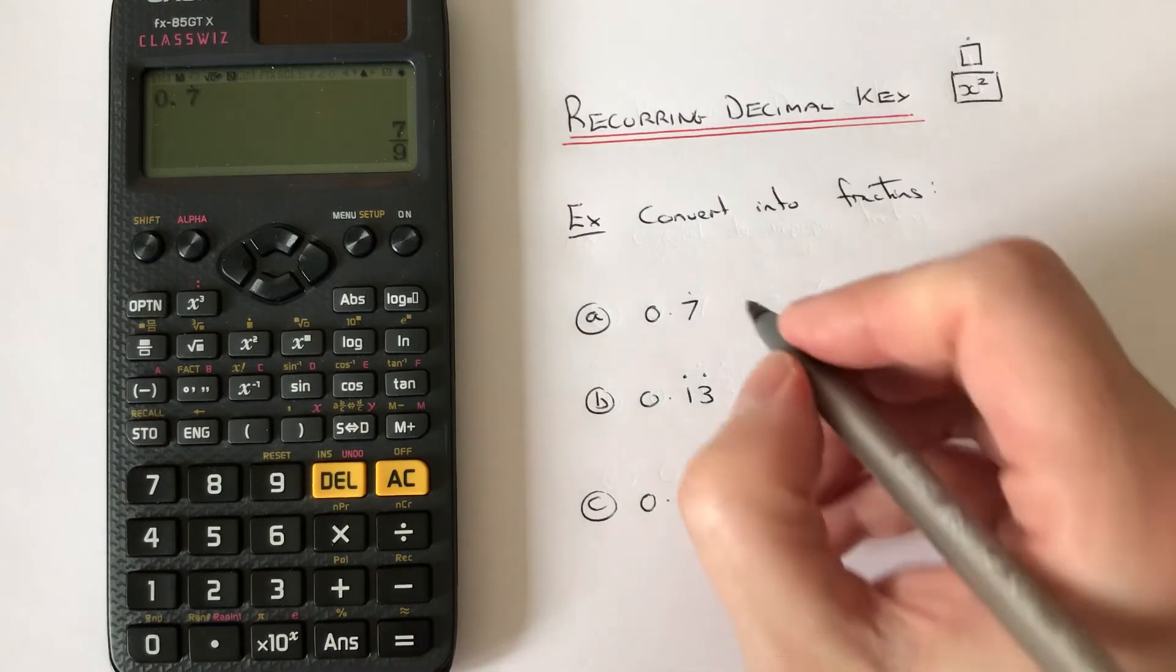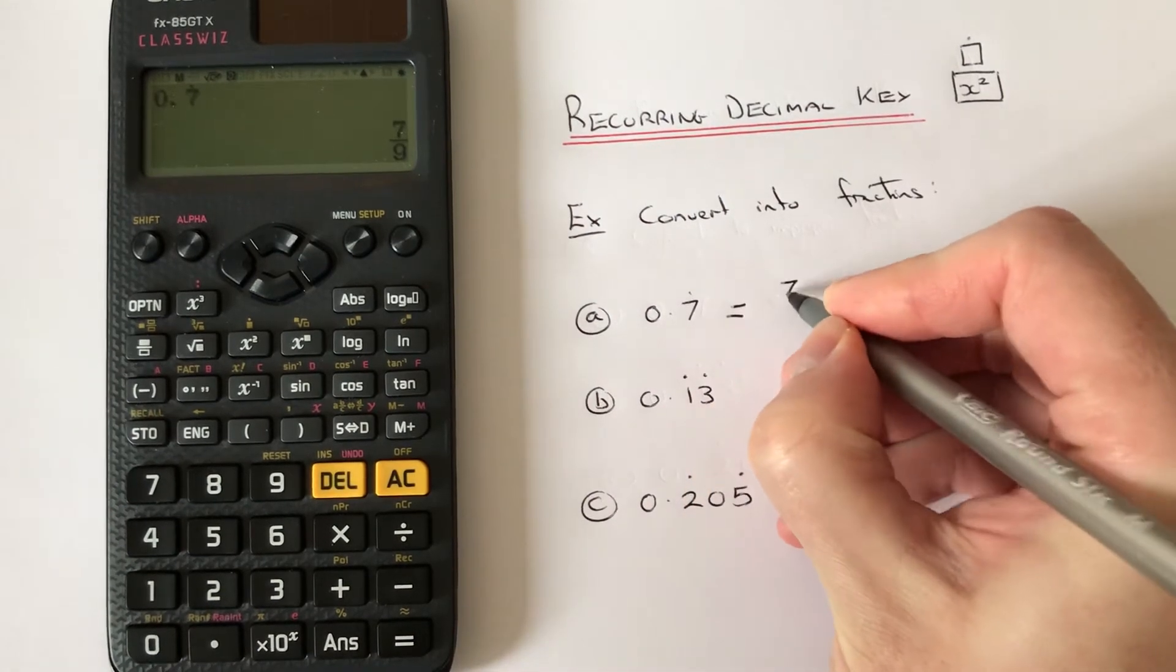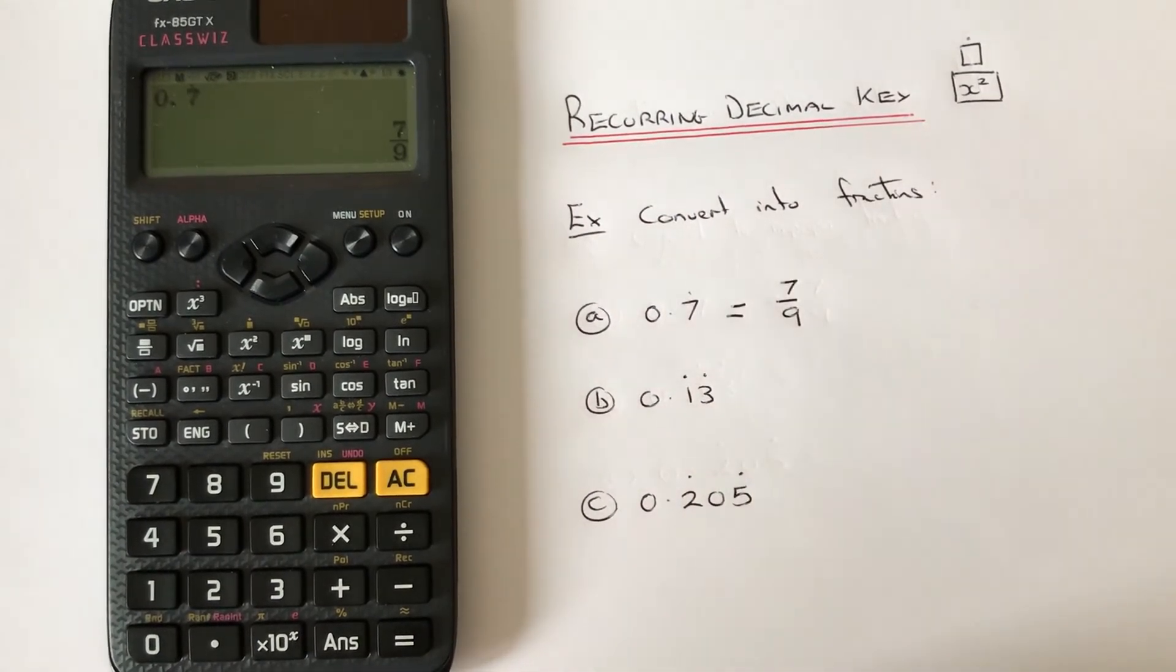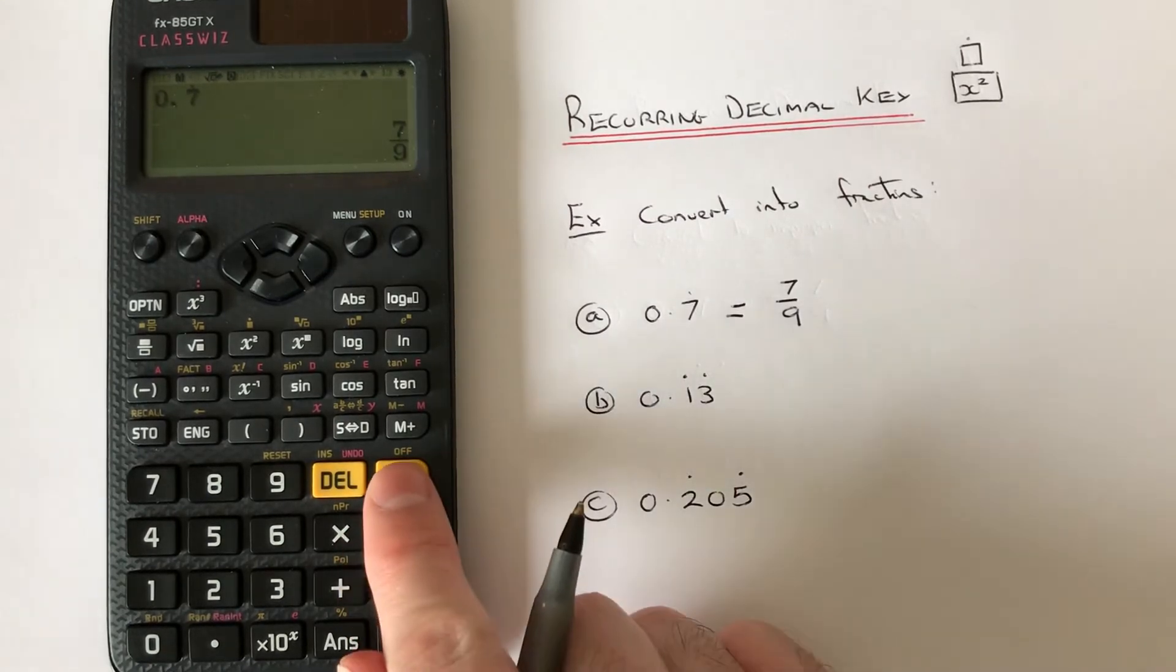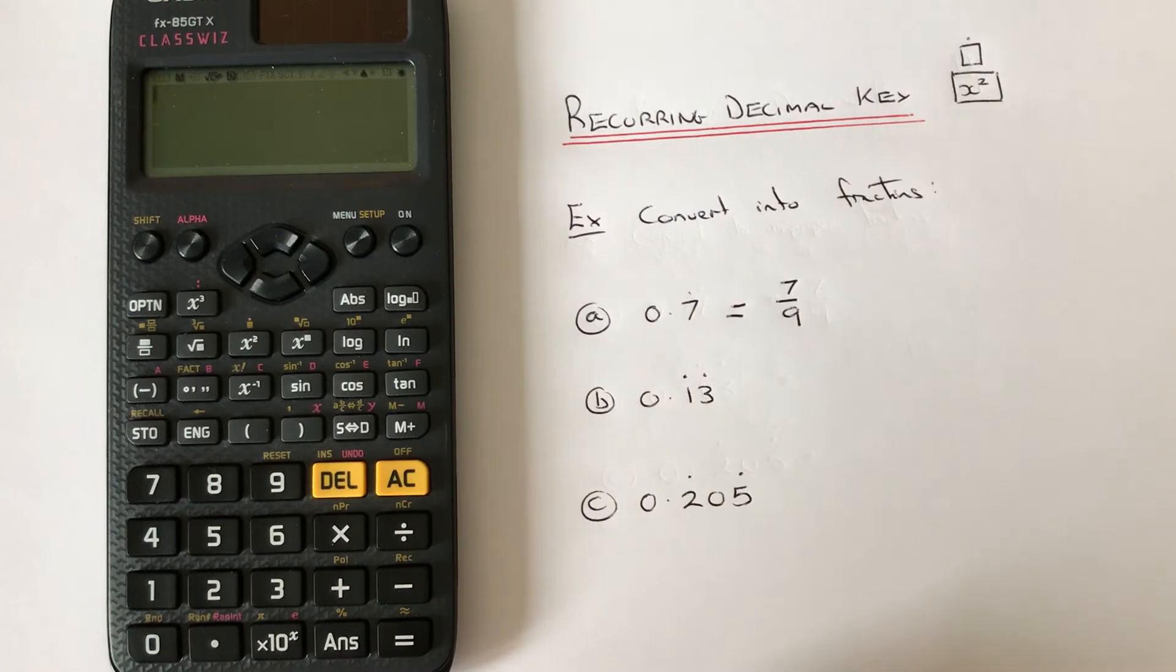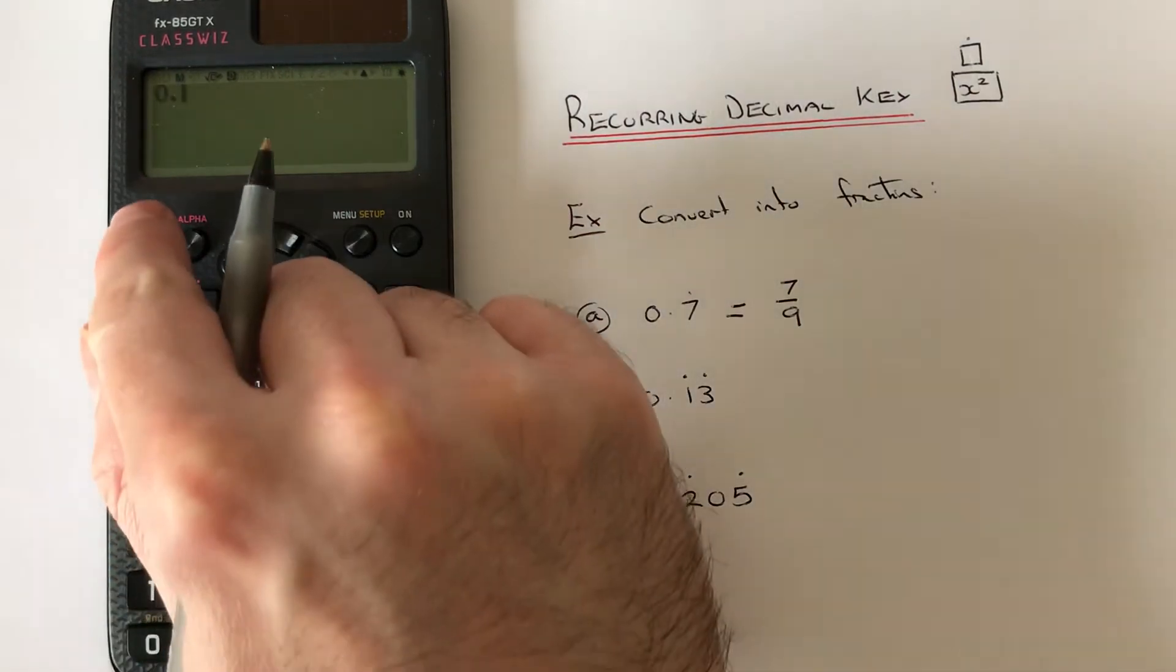Let's have a look at the second example. This time we've got 0.13 with dots on the 1 and the 3. So we go 0 point, then press shift box 1.